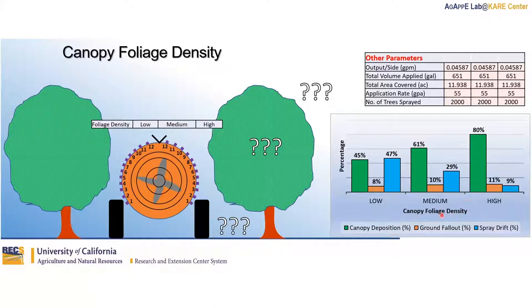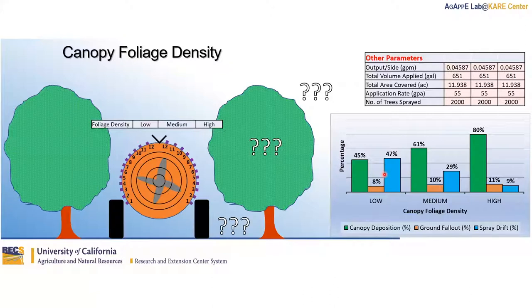How about canopy density — that is the canopy foliage density? Here there is no change in volume applied, so we are looking purely at the effect of canopy foliage density. Having more leaves in the same canopy volume increases spray interception, leading to increased canopy deposition at the expense of spray drift, although there is potentially some increasing ground fallout as a result of runoff from leaves.